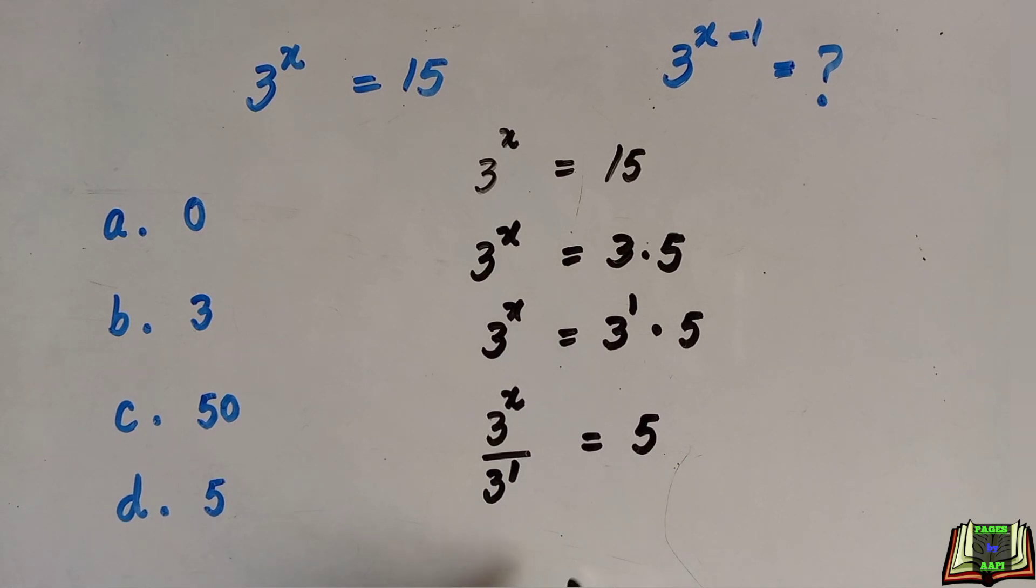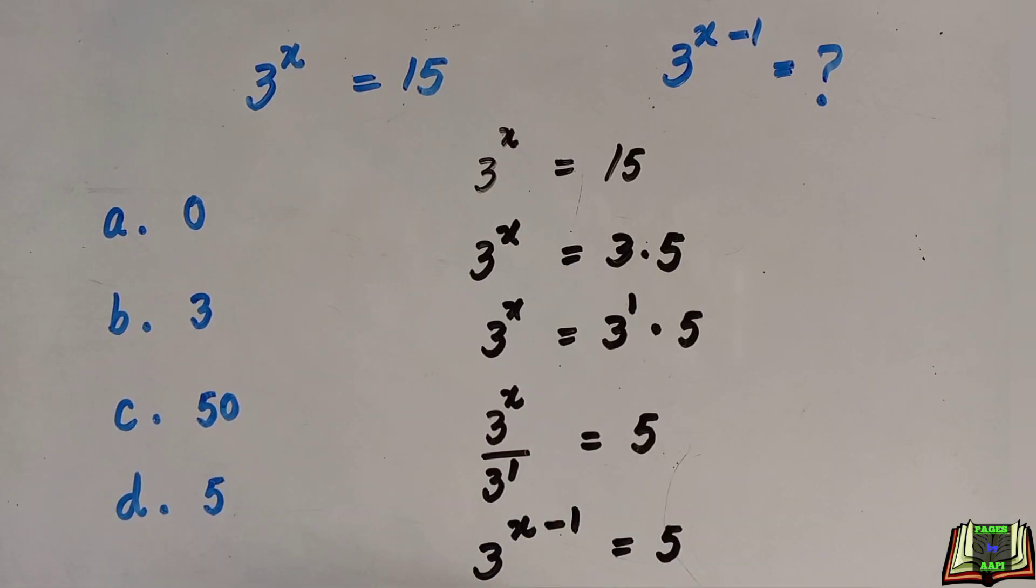Now we can write this as 3^(x-1) = 5. This is the required answer: 3^(x-1) = 5.